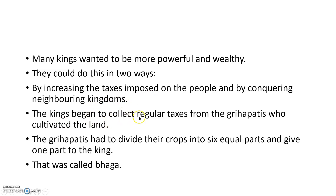The kings began to collect regular taxes from the grahapatis who cultivated the land. The grahapatis had to divide their crops into six equal parts and give one part to the king. That one part given to the king was called bhaga.